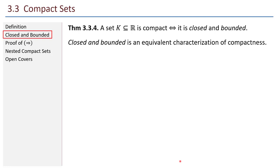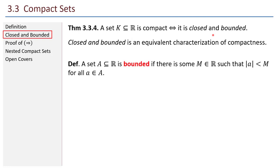Let's think about a proof for why compact is equivalent to closed and bounded. First, let's carefully define bounded. A set A of real numbers is bounded if there exists some M such that |a| < M for all a in A. So all elements of A live between −M and M, and the existence of such a large M guarantees that the set is bounded.